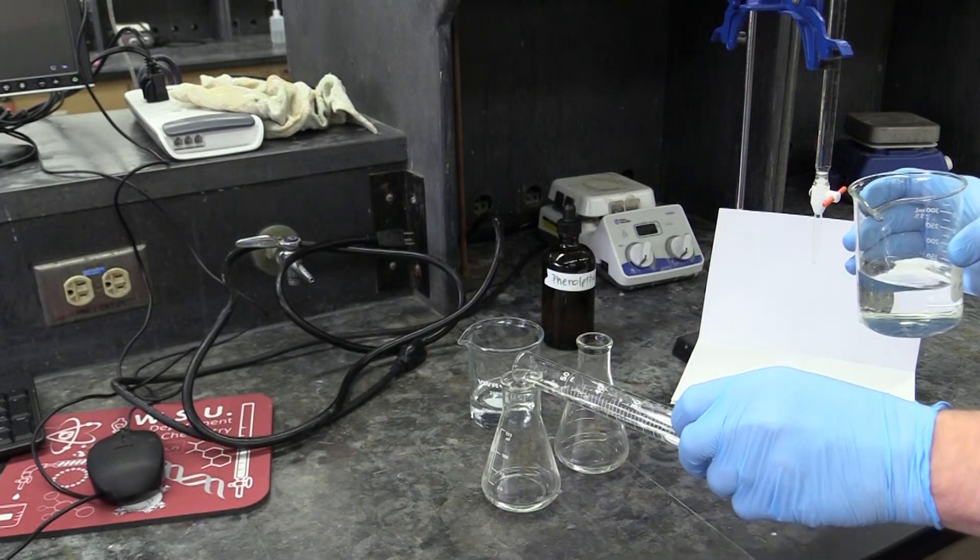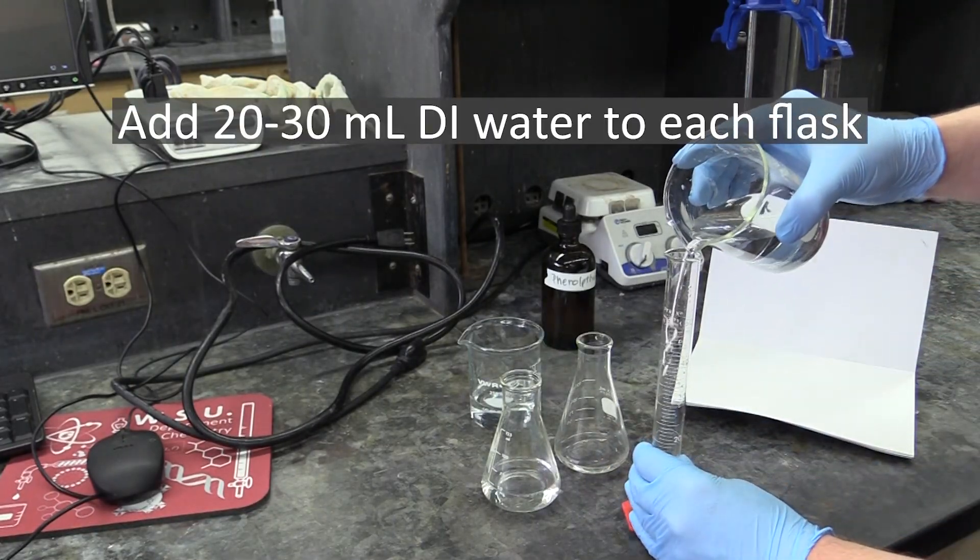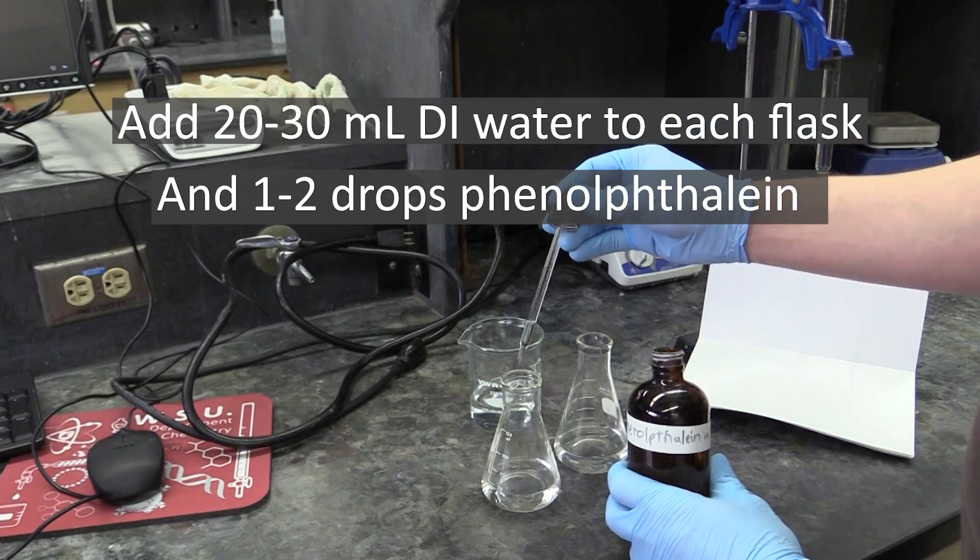Finish setting your flasks up by adding 20-30 ml of DI water to each one, and one or two drops of phenolphthalein indicator.